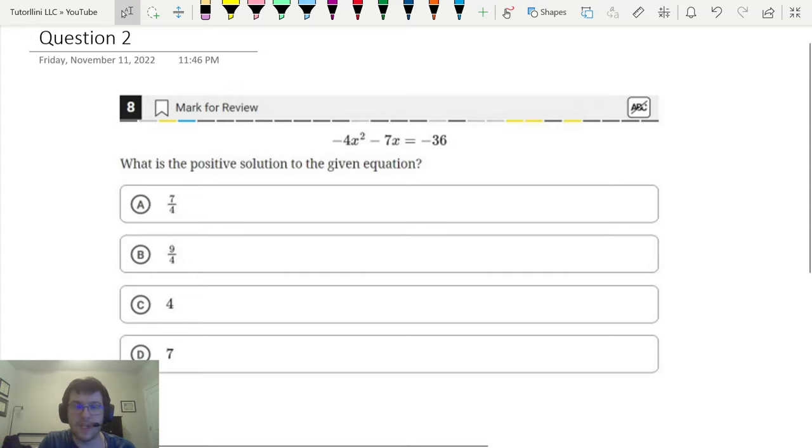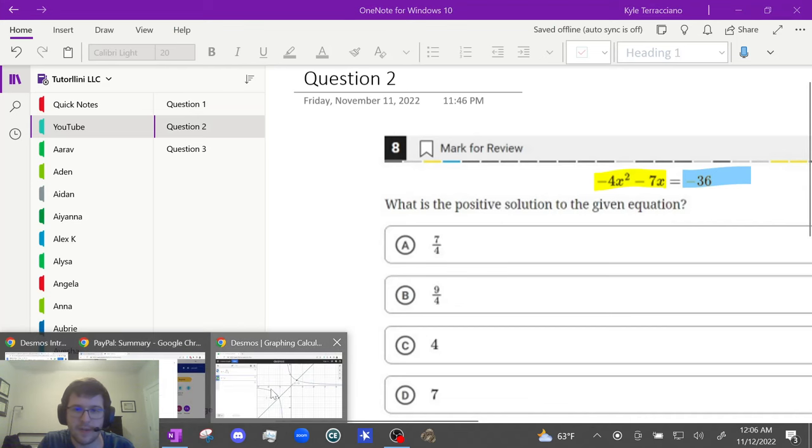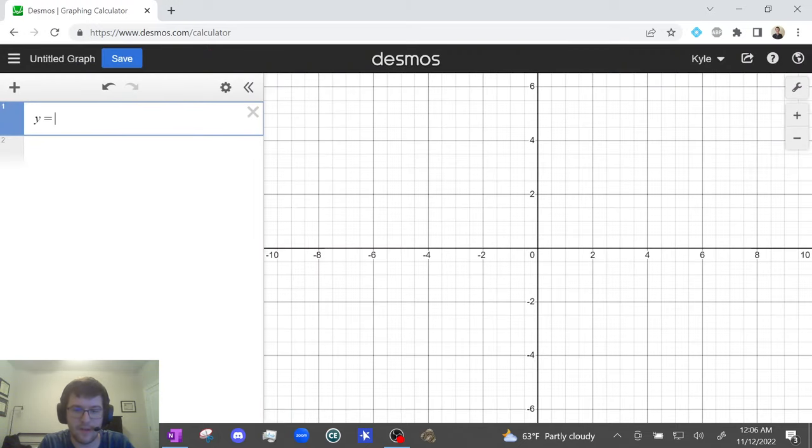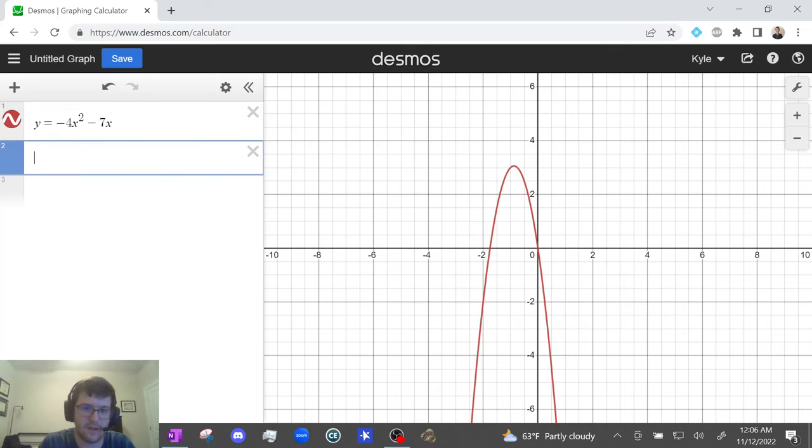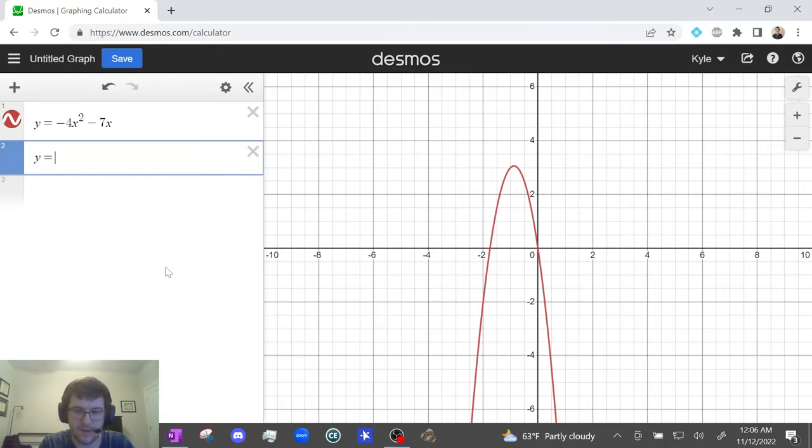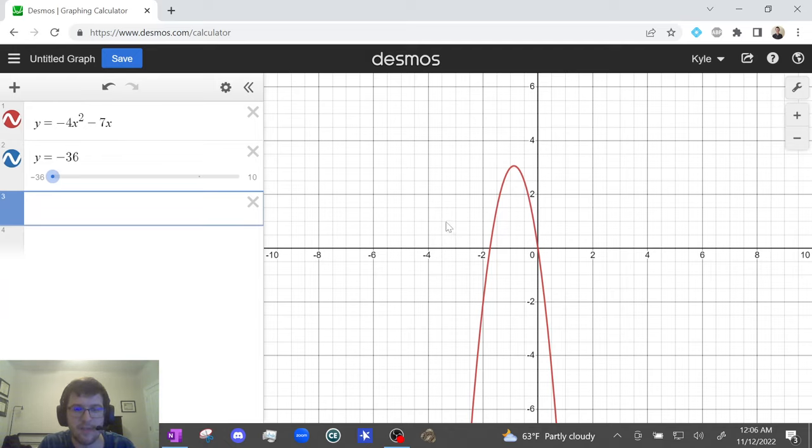Okay, so again, we're going to do y equals left-hand side and y equals right-hand side. So y equals negative 4x squared minus 7x and y equals negative 36. And I see right away that I can't really see where they intersect. I can't see the blue graph.